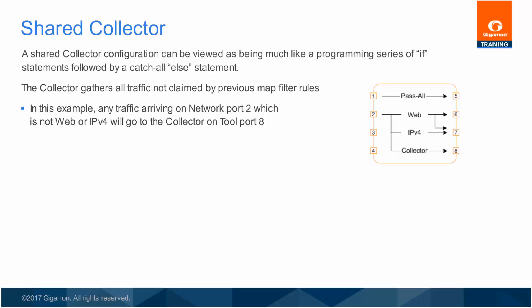Configuring a collector requires two parameters. First, the network ingress ports where traffic is originating, and second, the collector tool port where traffic should be forwarded. Since a collector is the catch-all for packets not claimed by any other map, a collector always holds the lowest priority for traffic matching.